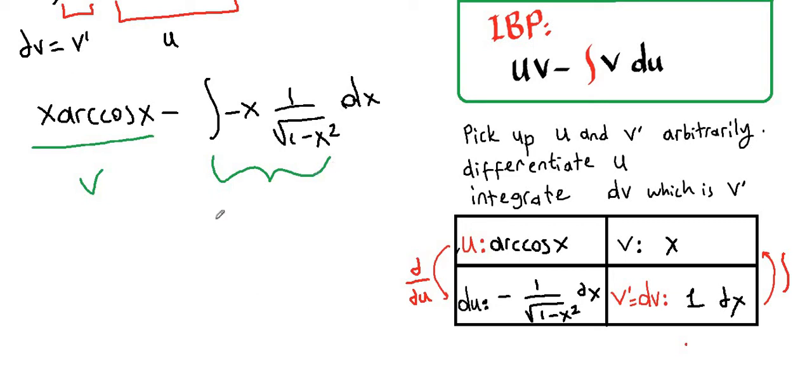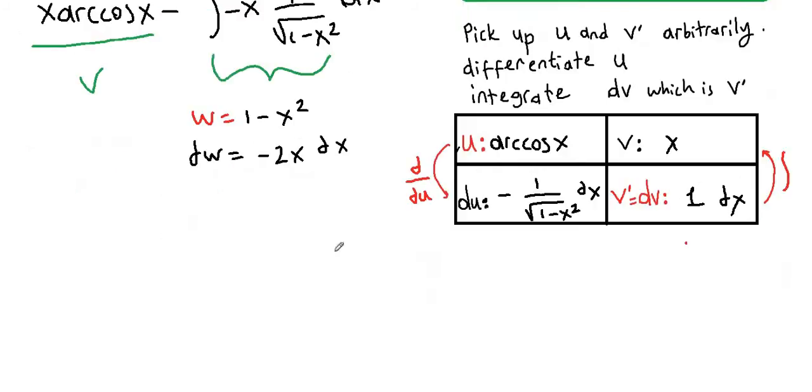Let's apply w substitution. Let w be one minus x squared. Then dw will be negative two x dx. Now we're going to write everything in terms of w.